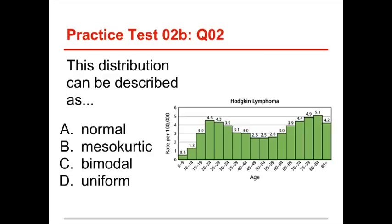Number two says, this distribution can be described as normal or mesokurtic or bimodal or uniform. Well, the answer to this one is bimodal. Bimodal means two modes. And modes are frequently occurring scores, or in a histogram like this, they're the peaks or the humps on the histogram. And this one has two.